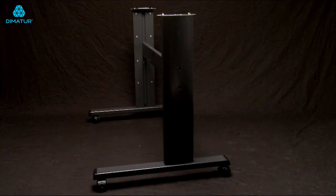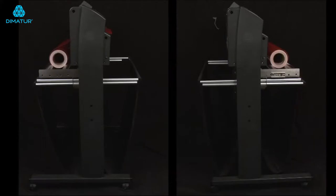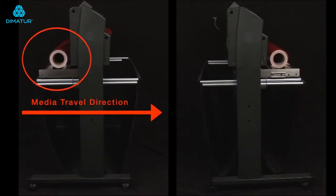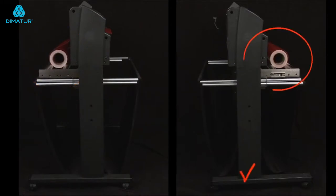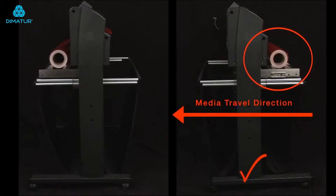Next, remove the cutter from the box. The FC8600 can be mounted to the stand in two configurations. Back loaded, where the media roll is to be placed in the back and travels toward the front of the cutter. Or front loaded, where the media roll is placed in the front of the cutter and travels toward the back of the cutter.